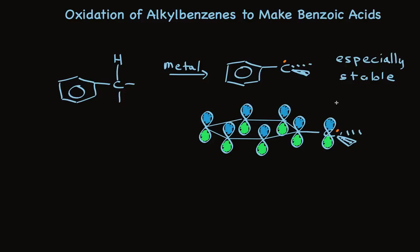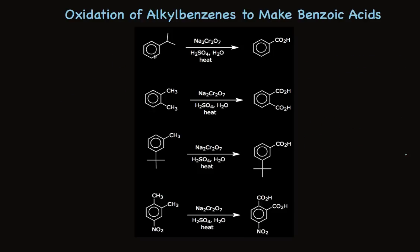This reaction is very useful synthetically. You can start with a compound like isopropylbenzene and make benzoic acid. You can start with a xylene that has a couple of methyl groups attached and end up with a dicarboxylic acid. If you have two alkyl groups and one of them is tertiary — like tertiary butyl — you'll selectively oxidize the methyl group and leave the tertiary butyl group, forming a product that is an alkyl benzoic acid.